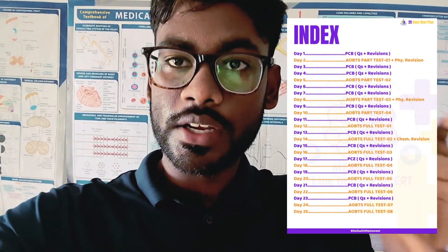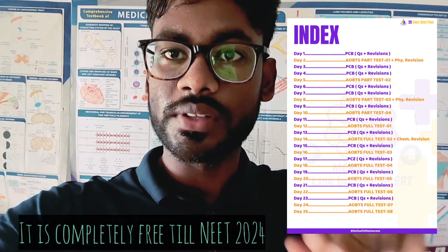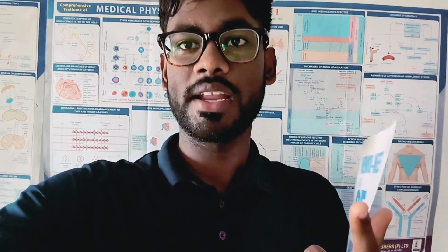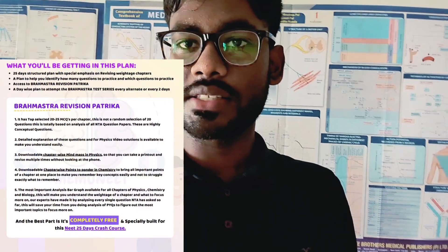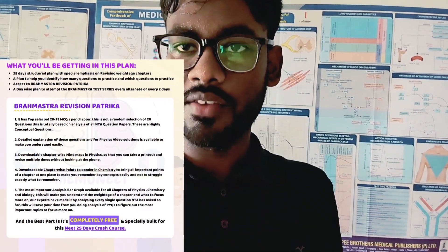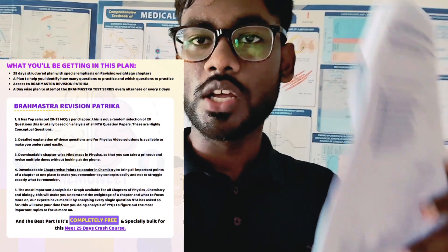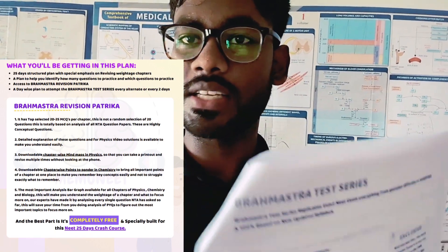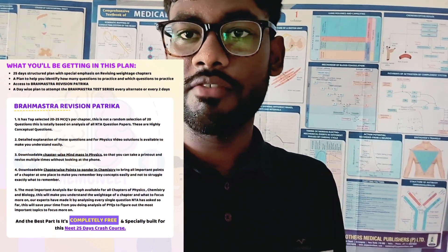MemoNeed has a 25-day plan available for 2024 — and it is completely free. There is a link in the description. First, print out the planner and follow it. The plan covers high-weightage chapters and high-weightage topics so you can cover everything in 25 days. You can also download the high-weightage chapters list.